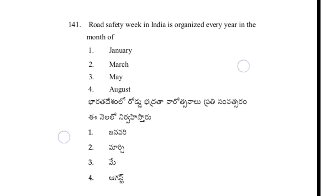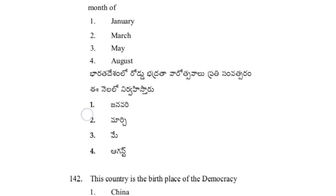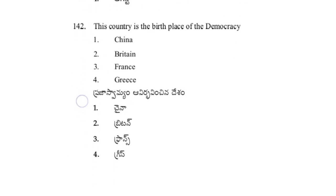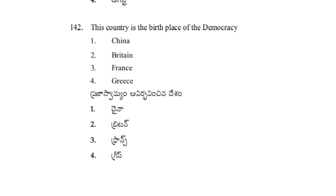Road Safety Week in India is organized every year in the month of January — option 1. This country is the birthplace of democracy — option 4, Greece.